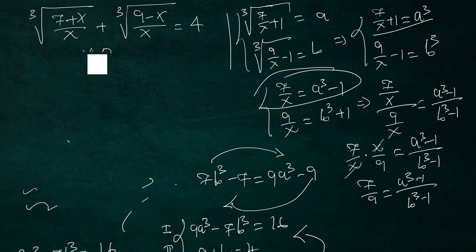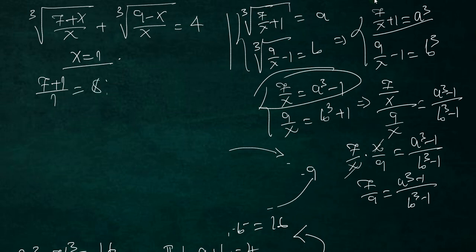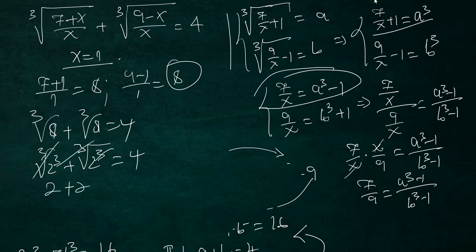Let's verify: substituting x = 1 into the original equation, (7 + 1)/1 = 8 and (9 - 1)/1 = 8. So we have the cube root of 8 plus the cube root of 8, which is the cube root of 2³ plus the cube root of 2³, giving 2 + 2 = 4. Our answer checks out: x = 1 is correct.